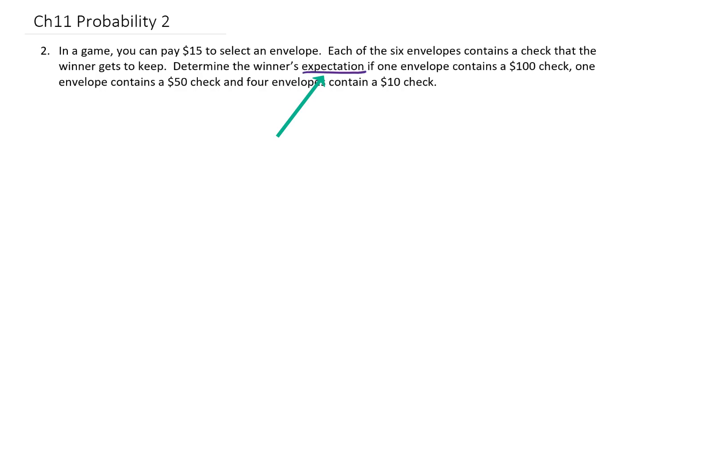Since we're looking to find an expectation or expected value, I'm going to create a little chart. In that chart, we're going to put each possible outcome and the probability of that outcome happening.